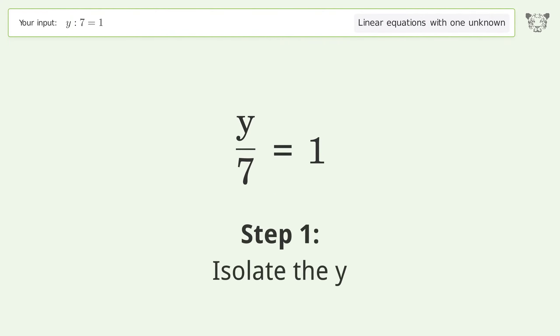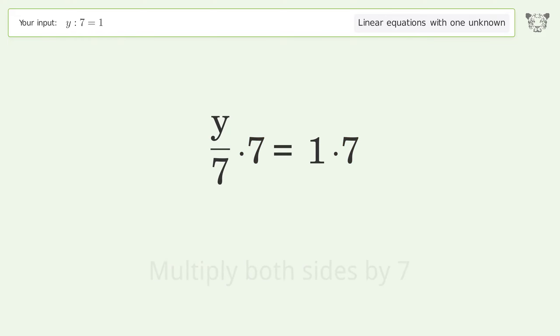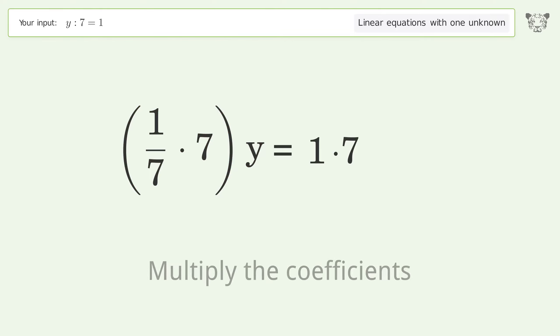Isolate the y. Multiply both sides by 7. Group like terms. Multiply the coefficients.